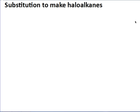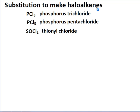Substitution reactions of alcohols: we can use substitution reactions to make haloalkanes. If we want to make chloroalkanes, we can use one of these three chemicals — phosphorus trichloride (PCl₃), phosphorus pentachloride (PCl₅), or thionyl dichloride (SOCl₂).